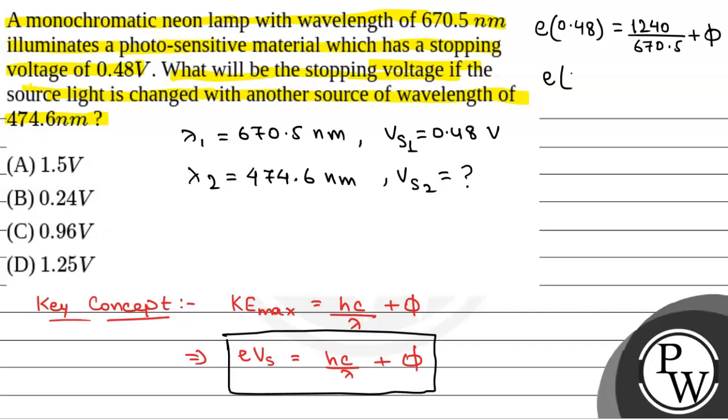In the second equation, we will have e into Vs0 is equal to—call this as Vs0—so, e into Vs0 is equal to 1240 by 474.6 plus phi.